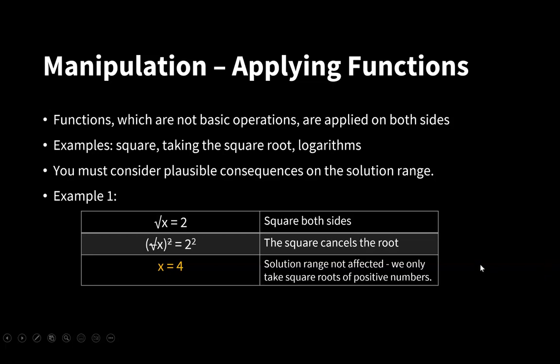In the first example, we have an equation saying that the square root of x equals 2. So in order to cancel the square root, we can square both sides because square root to the power of 2 means that we can remove the square root. So here we are left with x on the left side, and 2 to the power of 2, or 2 squared, is 4. The solution range is not affected in this case because we only take square roots of positive numbers.